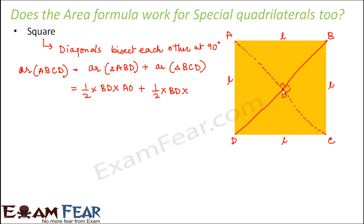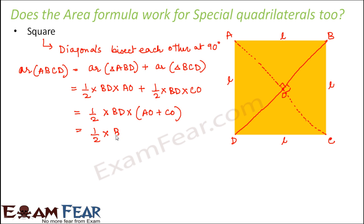Since in a square the diagonals bisect each other at 90 degrees, the perpendicular from A to BD coincides with the diagonal. So both perpendiculars meet at point O, because they are both part of diagonal AC. Therefore the expression becomes half into BD into (AO plus CO). Now AO plus CO is nothing but AC, so this simplifies to half into BD into AC.